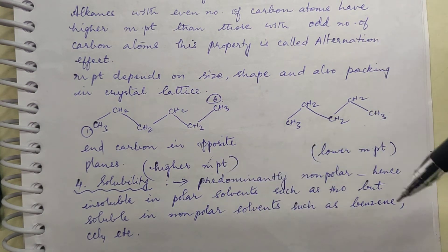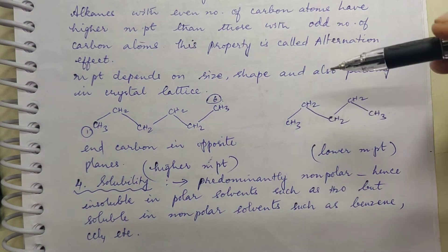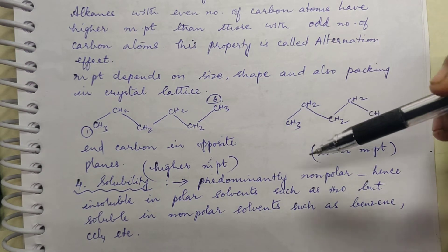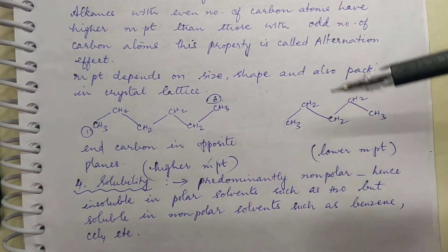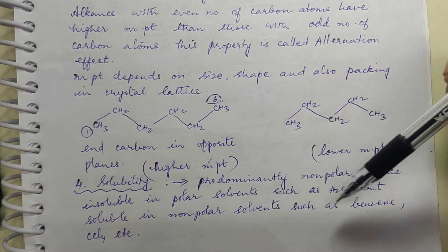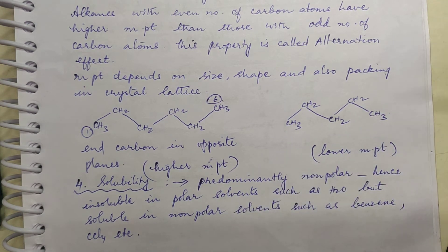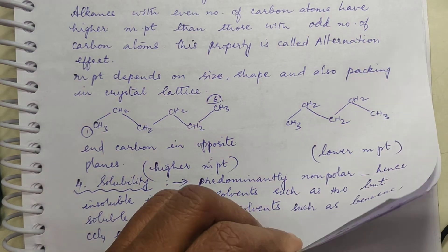Alkanes are non-polar since C-H bonds are non-polar. So they are insoluble in polar solvents such as water, but they are soluble in non-polar solvents such as benzene, carbon tetrachloride, and chloroform.